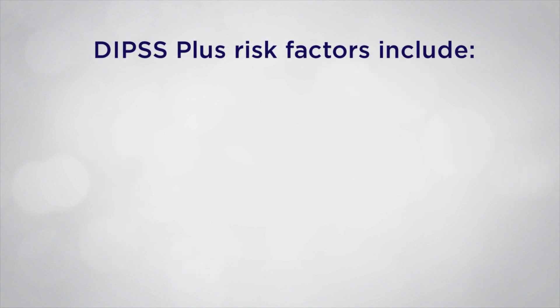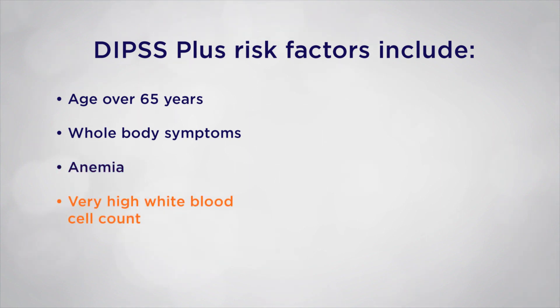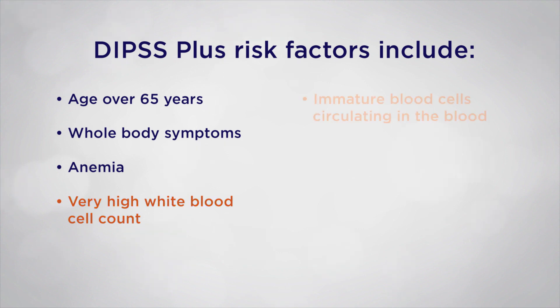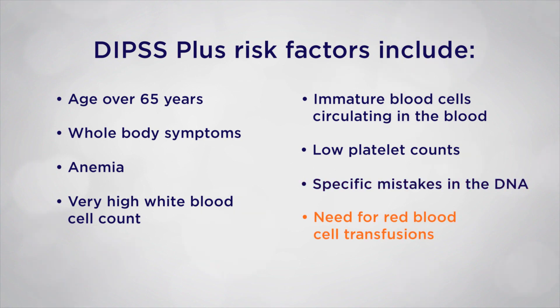Regardless of whether your healthcare team uses one of these systems, there is a list of eight D-IPSS Plus risk factors that help reflect risk level: age over 65 years; whole body symptoms such as weight loss, fever, or night sweats; anemia, meaning that your red blood cell count is low; very high white blood cell count, specifically greater than 25; immature blood cells circulating in the blood; low platelet counts, specifically less than 100; specific mistakes in the DNA; and need for red blood cell transfusions.